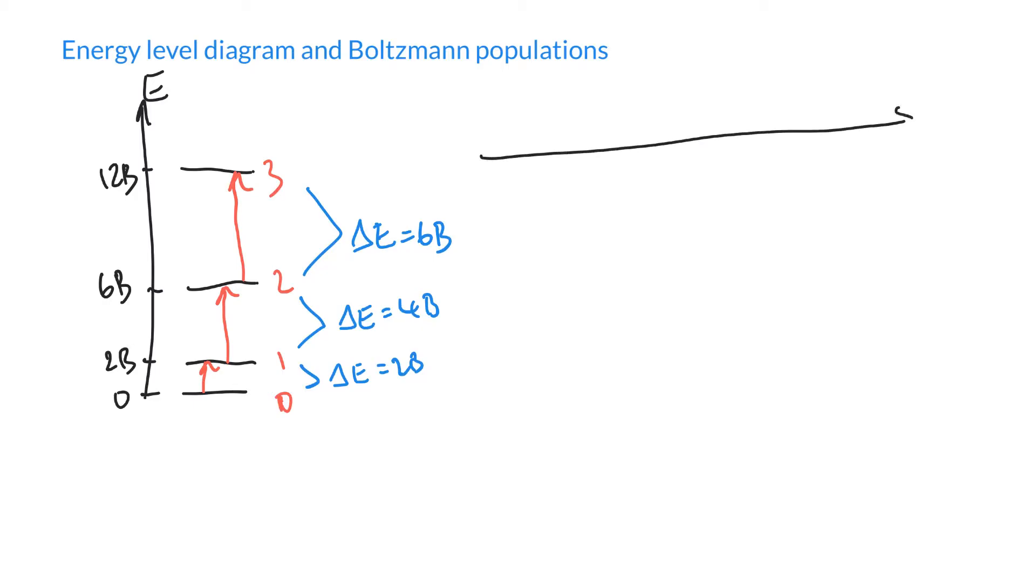If we plot the frequency and look at these guys—these are at 2B over H, which converts it into frequency, and 4B (the energy divided by Planck's constant), and 6B, and so on—we see these lines corresponding to these transitions. I think we looked at this earlier. This is 0 to 1, this is 1 to 2, this is 2 to 3.